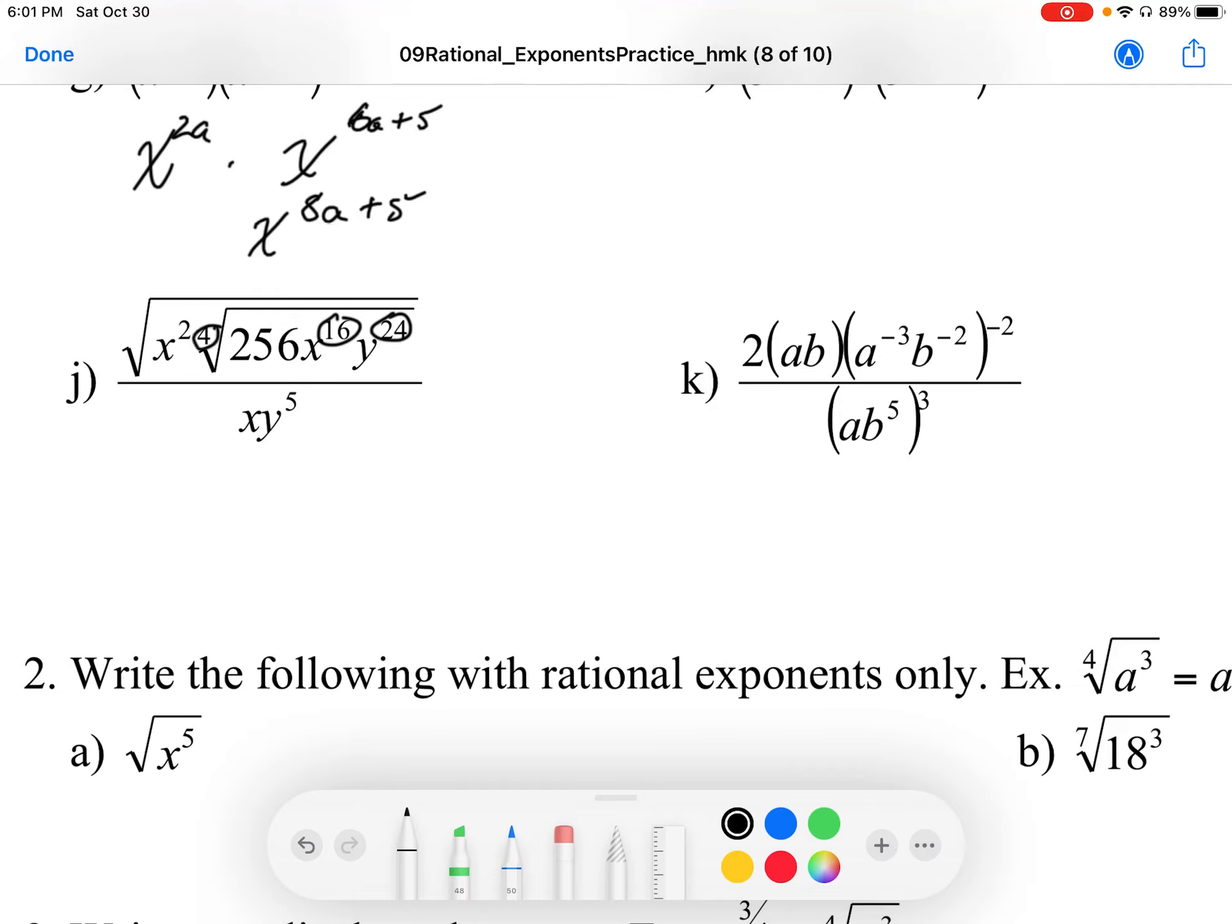So root 4, power 16, power 24, and 256 is really a power of 2. It's 2 to the power, that is going to be 2 to the power 8. So 2 to the power 8 is 256, and we can simplify this like this.